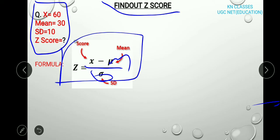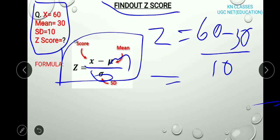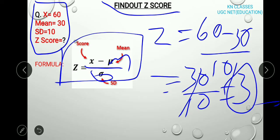See the example: X is 60. So Z equals, put the formula, X is 60 and M mean is 30. 60 minus 30 and standard deviation is 10, divided by 10. 60 minus 30 equals 30, divided by standard deviation 10, and 30 by 10 is 3. So here, Z-score is 3.